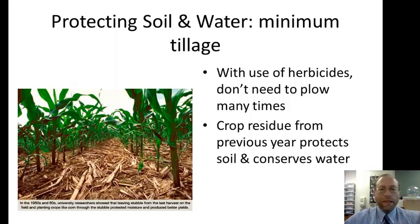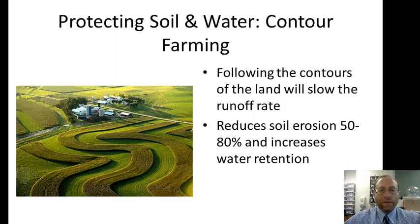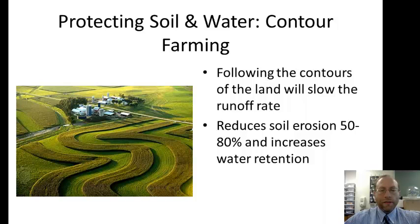Protecting soil and water can be achieved through minimum tillage—you don't have to plow as many times when using herbicides, and crop residue left on the soil protects it and conserves water. Contour farming is another method. The crop rows follow the contours of the land, staying at the same elevation, so when it rains, runoff is reduced. This reduces soil erosion by 50 to 80 percent and allows the soil to hold water better.